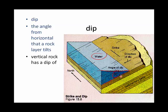If the rock were vertical, it would have a dip of 90 degrees, whereas horizontal rock wouldn't dip at all — its dip would be zero.